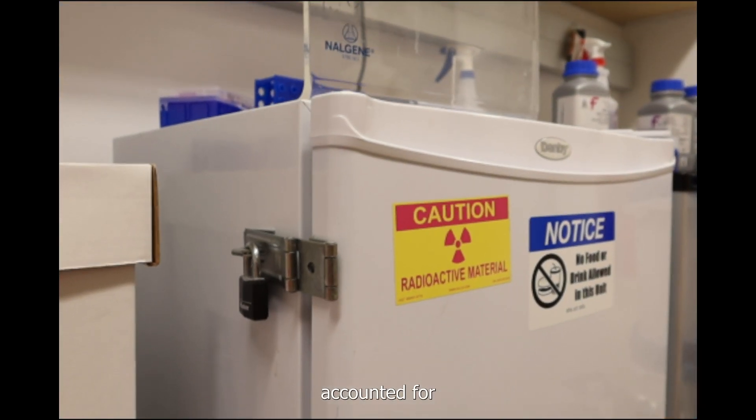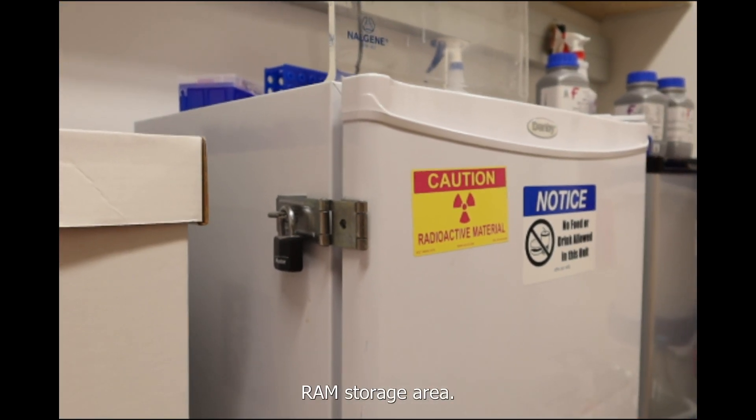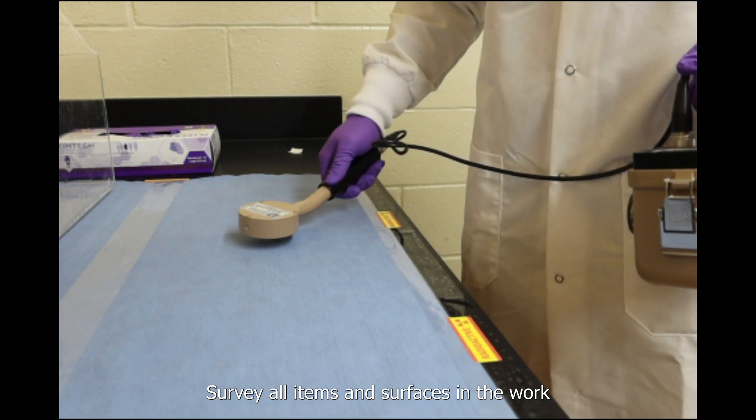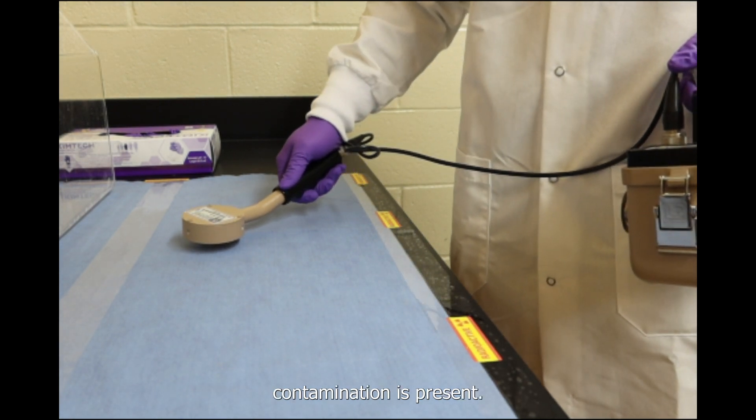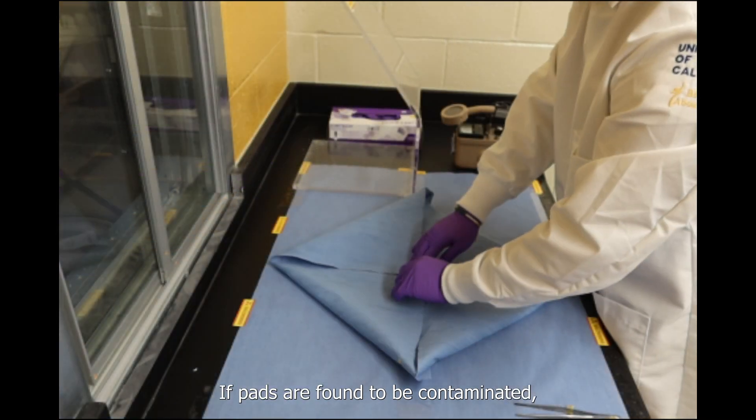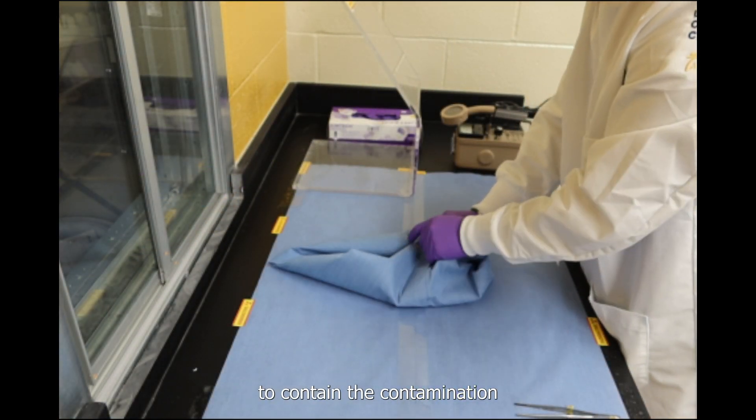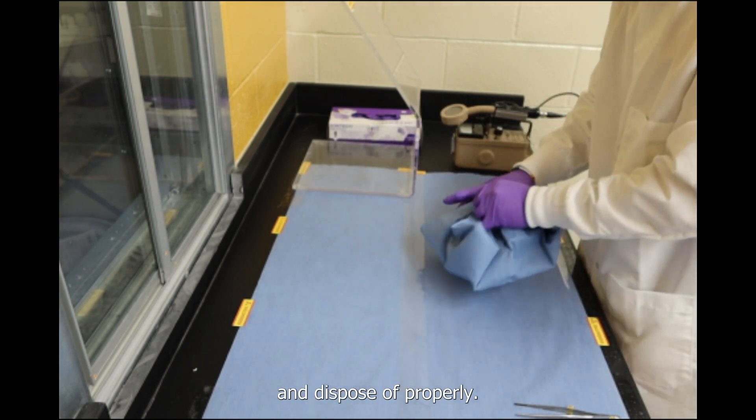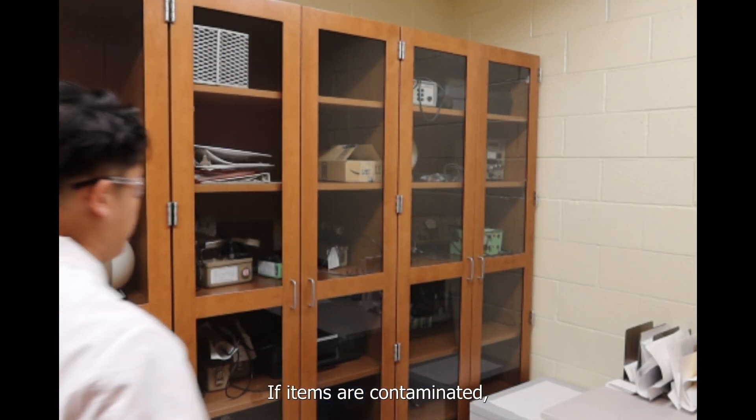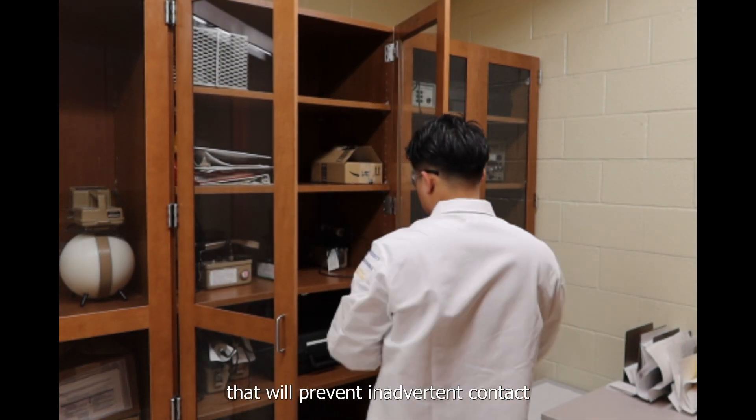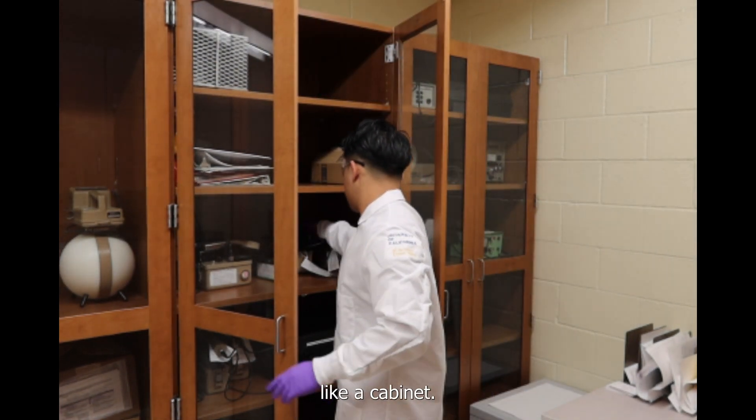Ensure all RAM is accounted for and place it in the designated RAM storage area. Survey all items and surfaces in the work area to ensure no contamination is present. If pads are found to be contaminated, remove them in a way to contain the contamination and dispose of properly. If items are contaminated, store them in a low-traffic area that is posted that will prevent inadvertent contact like a cabinet.